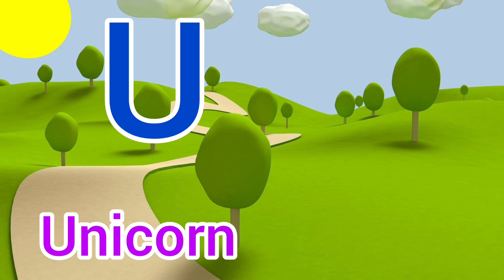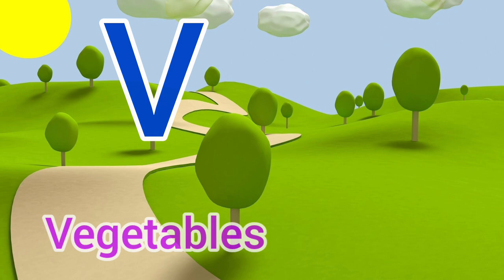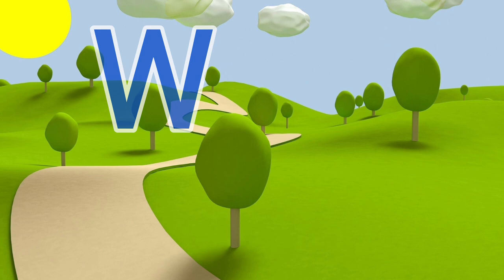U for unicorn, unicorn means unicorn. V for vegetables, vegetables means sabjiya.